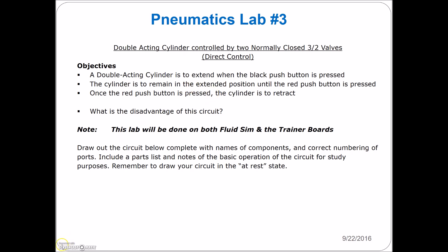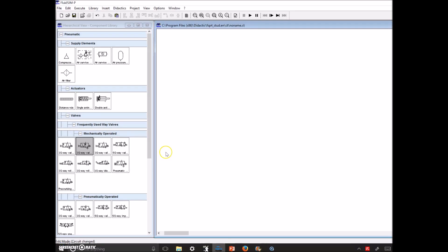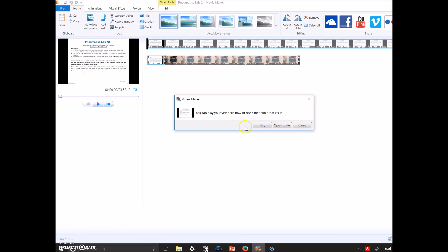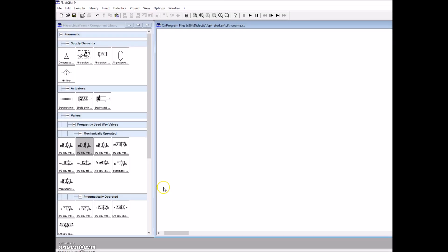So let's bring up the fluid sim and let's build it up. Black is to extend and red is to retract. Now we need all the different bits and pieces here. Lab number three, let's drop in our compressed air supply.